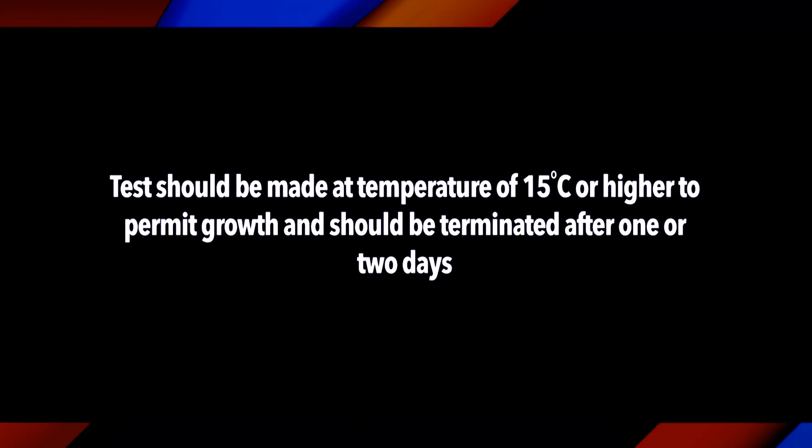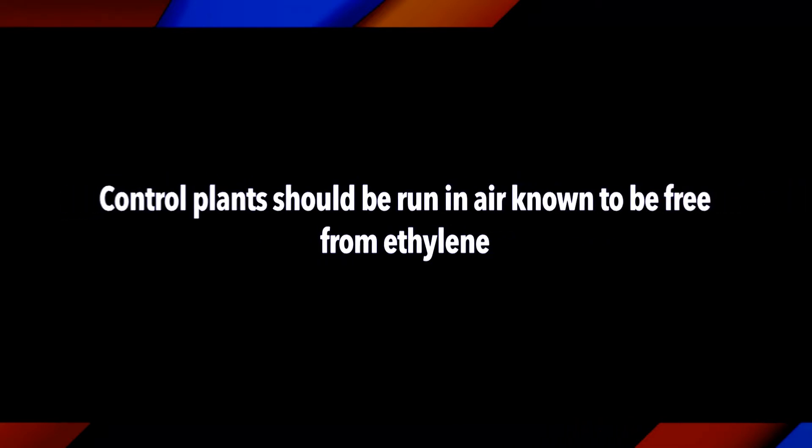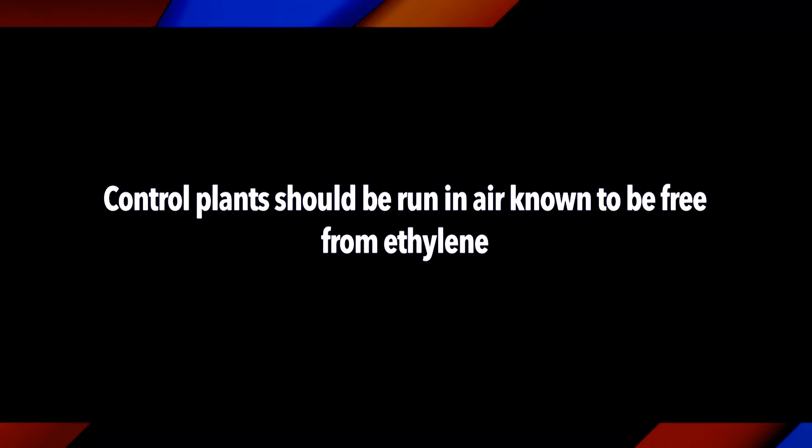Young, vigorously growing plants should be used since they are more sensitive and give a quicker response. The upper sides of the petioles should form acute angles with the stem. The test should be made at a temperature of 15°C or higher to permit growth, and should be terminated after one or two days. Control plants should be run in air known to be free from ethylene. The test is usually carried out in one of three ways.